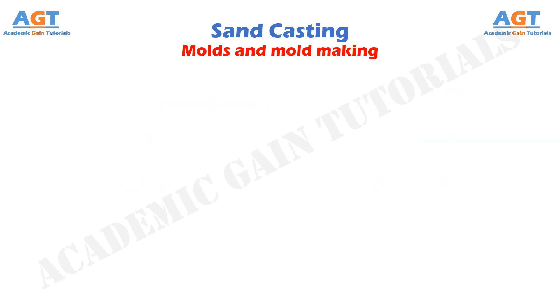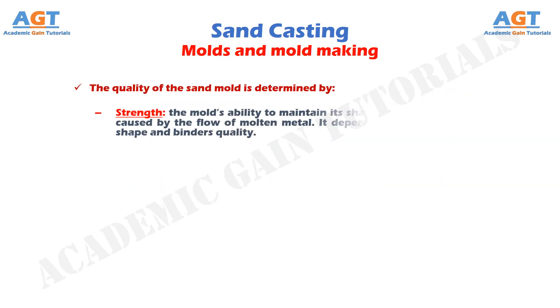The quality of the sand mold is determined by: Strength, which is the mold's ability to maintain its shape and resist erosion caused by the flow of molten metal. It depends on grain size and shape and binder quality.